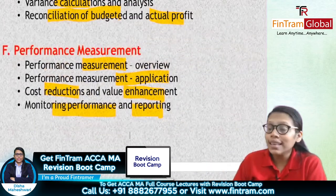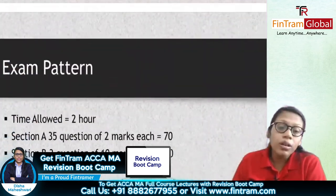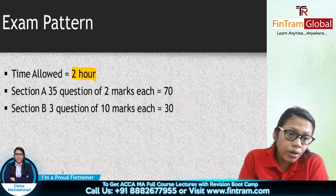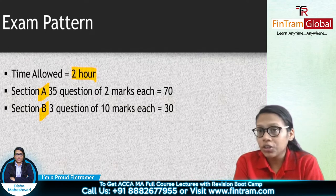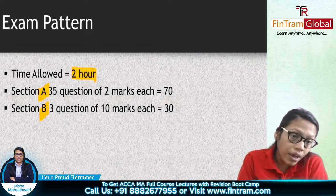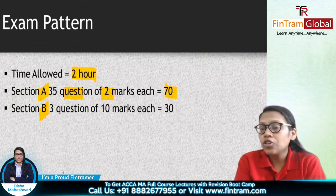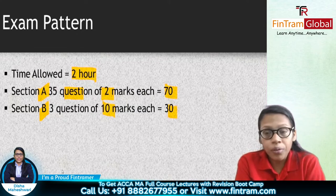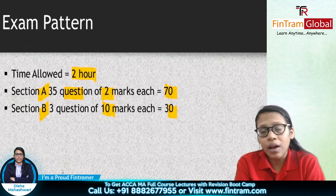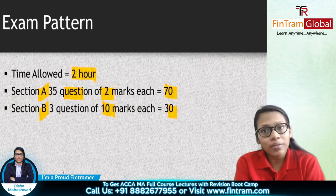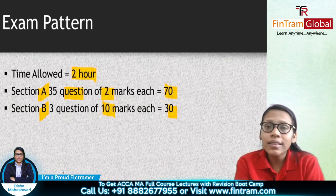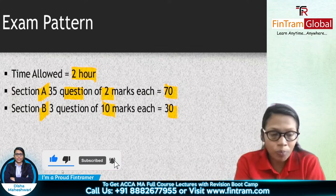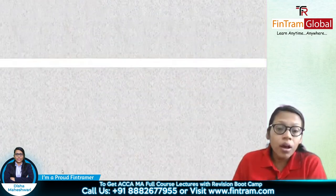That's the full syllabus area. Now let's talk about the exam pattern. The management accounting exam is two hours, divided into two sections. Section A has 25 questions of two marks each, making a total of 70 marks. Section B has three questions of ten marks each, making a total of 30 marks — giving a grand total of 100 marks. The VQM is also designed with a Section A and Section B so you get a clear idea of how questions are asked.